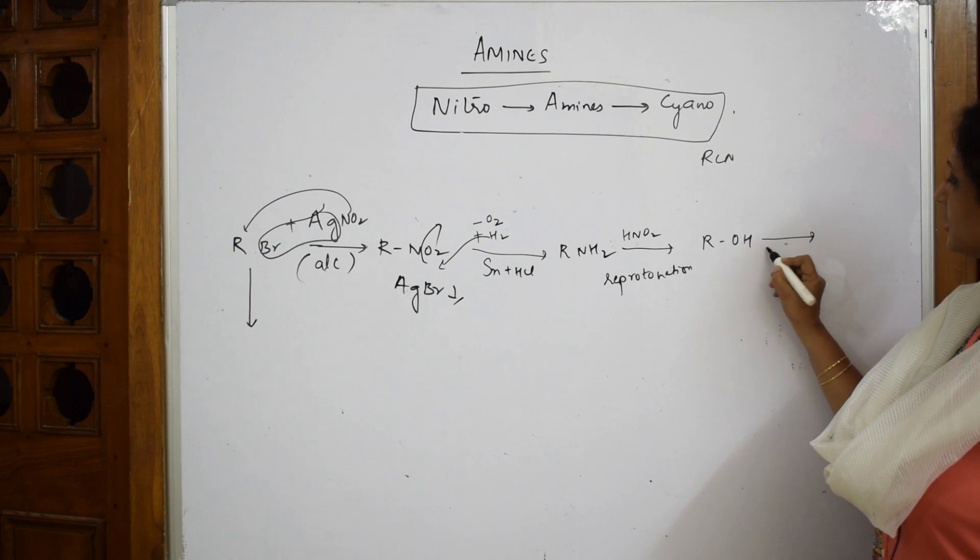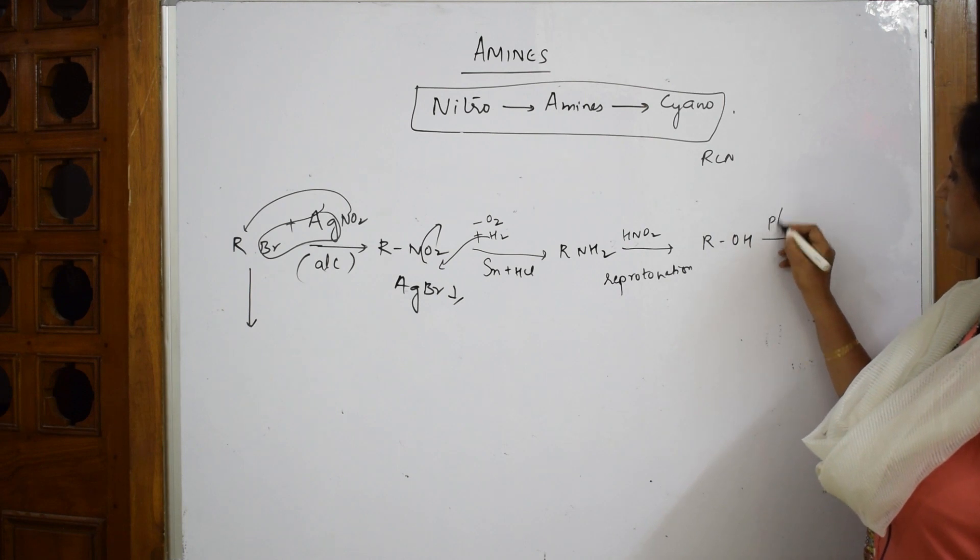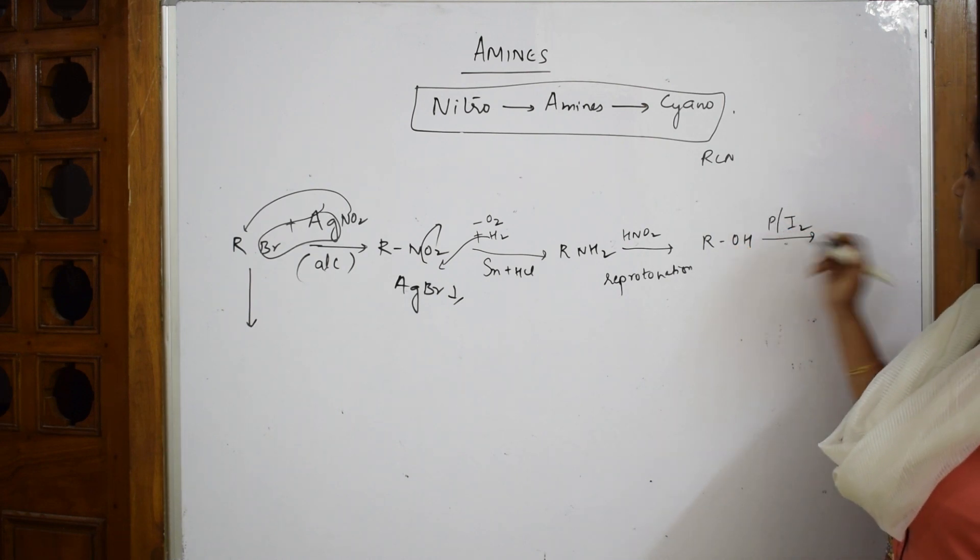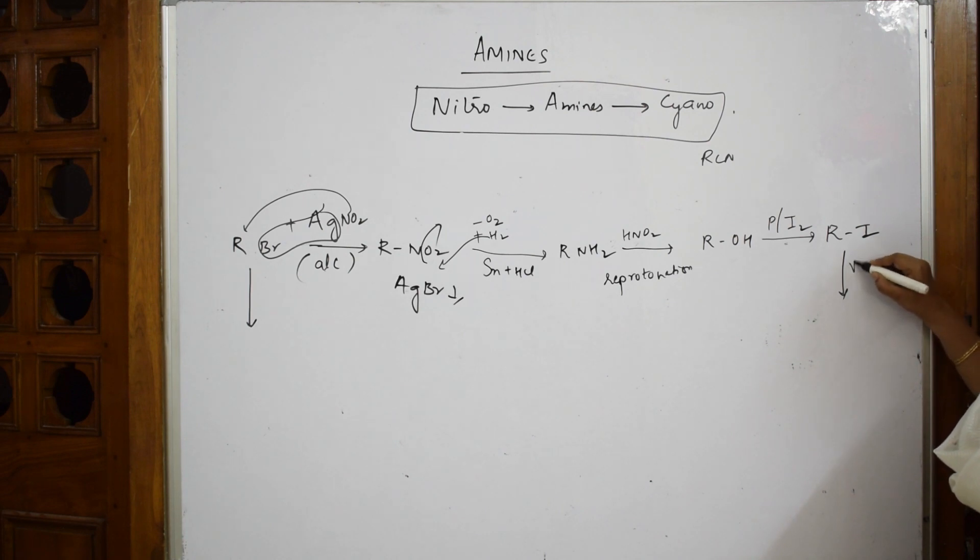You have to convert the alcohol into iodo compounds first. I'm going to add phosphorus in the presence of iodine (P/I2). When I add this, it becomes RI. Since it's not complete, then I'm going to introduce KCN to this. Alcoholic KCN - when I'm adding CN into this, this is your I minus, CN minus. I is replaced by cyano, I get RCN. This is how I prepare cyano group.